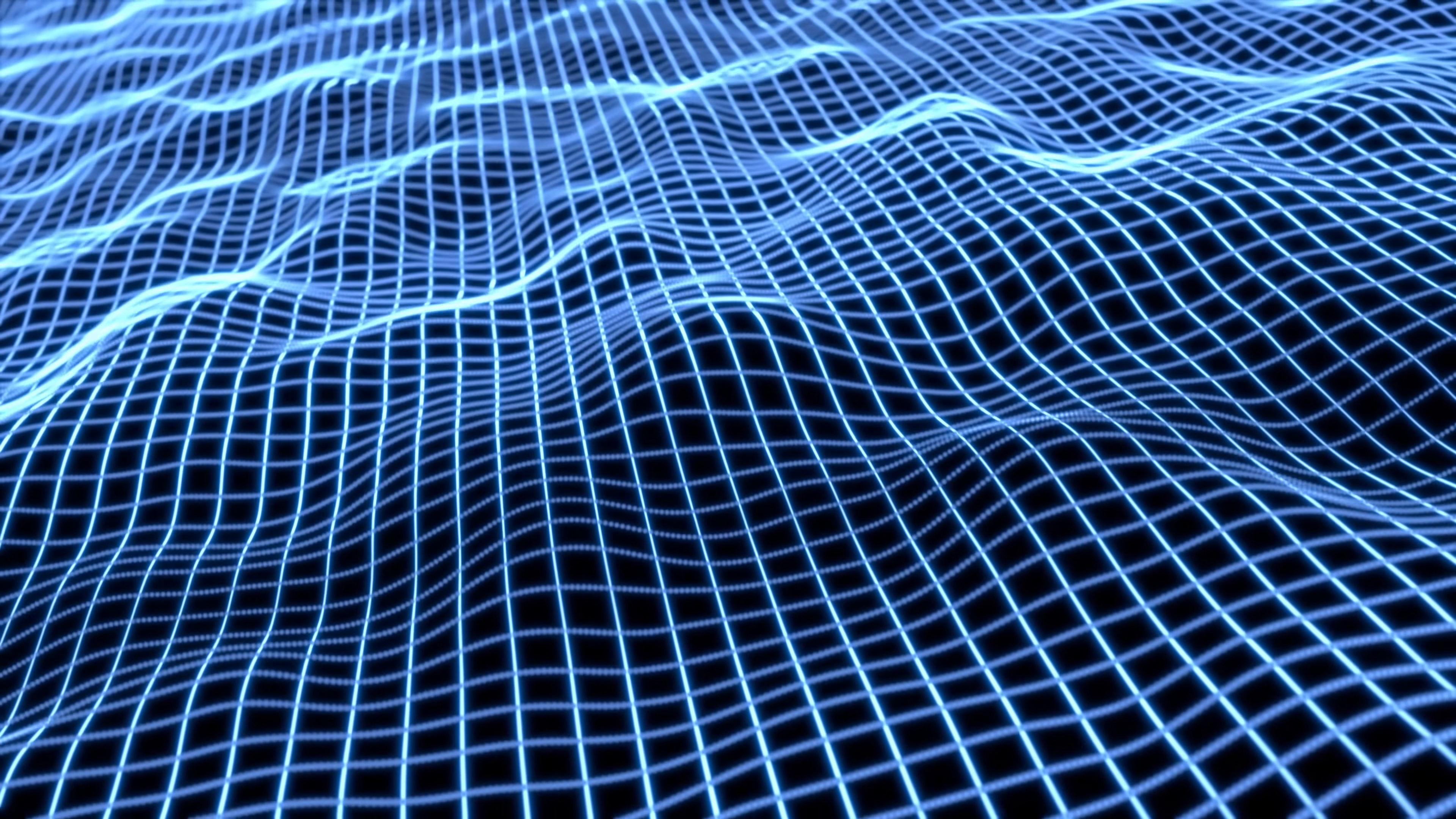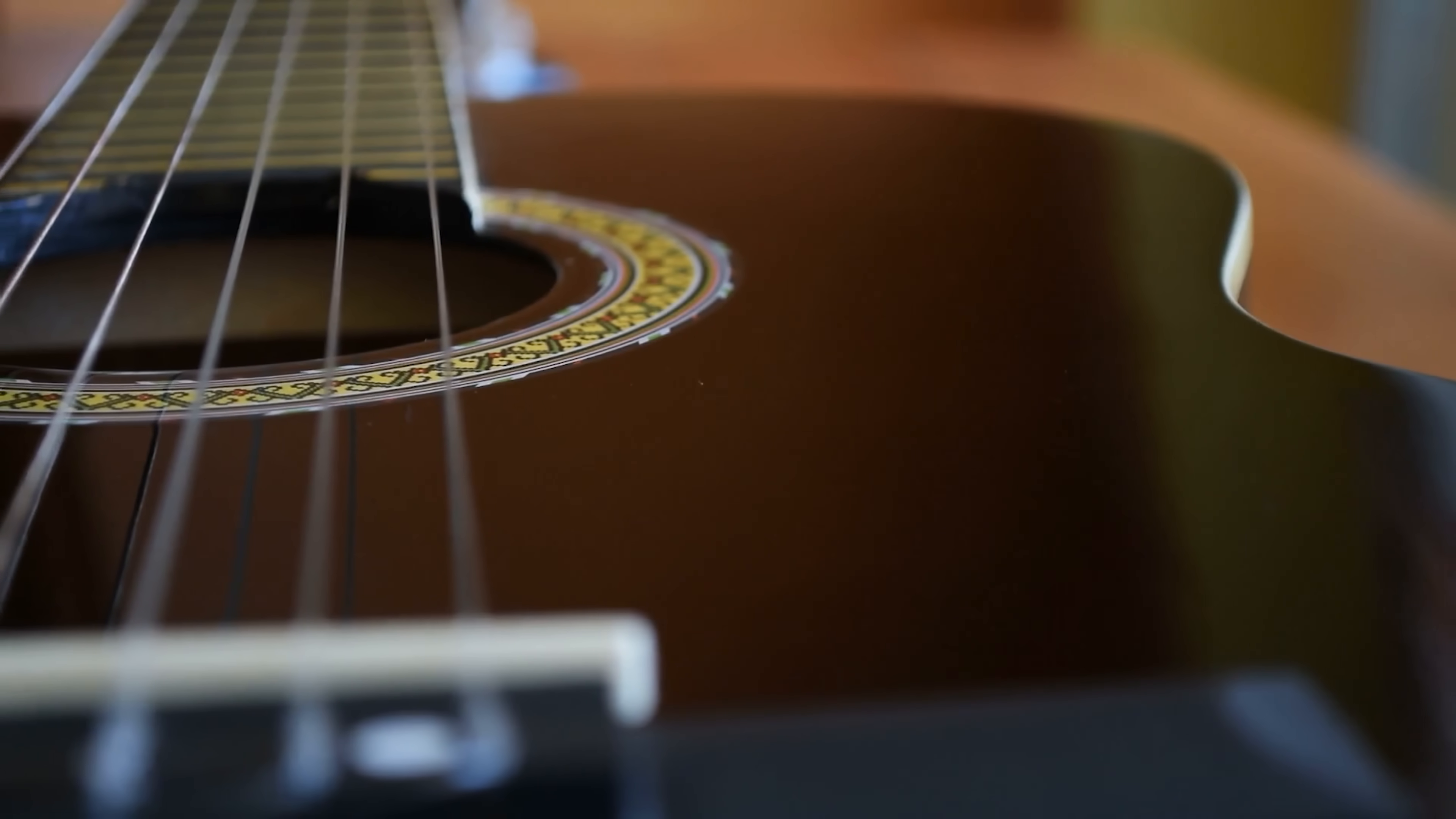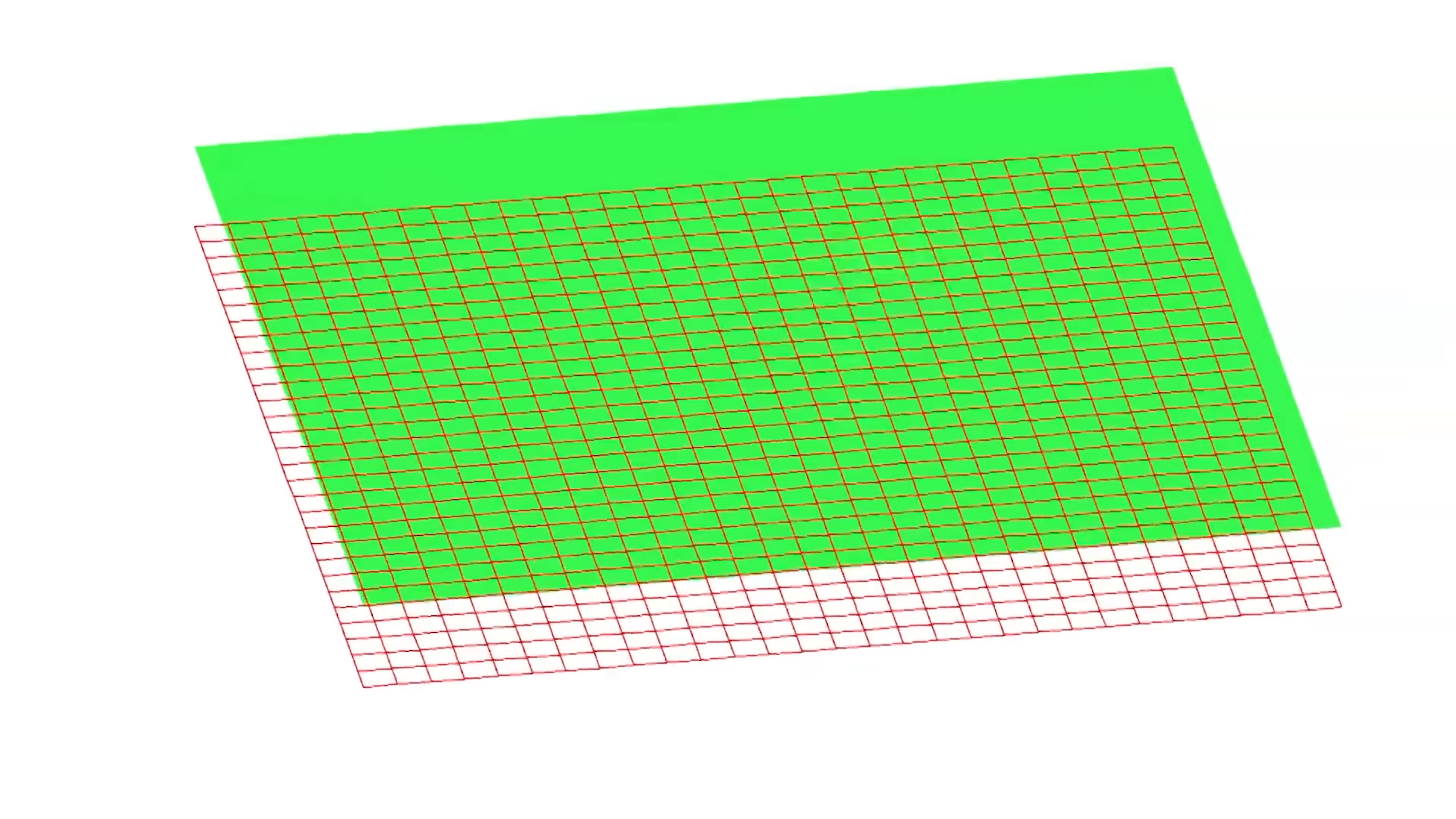Each quantum field defines a particular type of something. One field might define all of the electrons in existence, while another may define quarks that make up an atom. Where nothing can be found, the quantum field is relatively quiet. Think of it like a guitar string that hasn't been strummed, or a graph that has a zero value. But wherever in time and space mass or energy can be found, the quantum field is resonating at that point, and when the resonance reaches a certain threshold or quantity, the universe expresses that as, say, an electron or a photon.